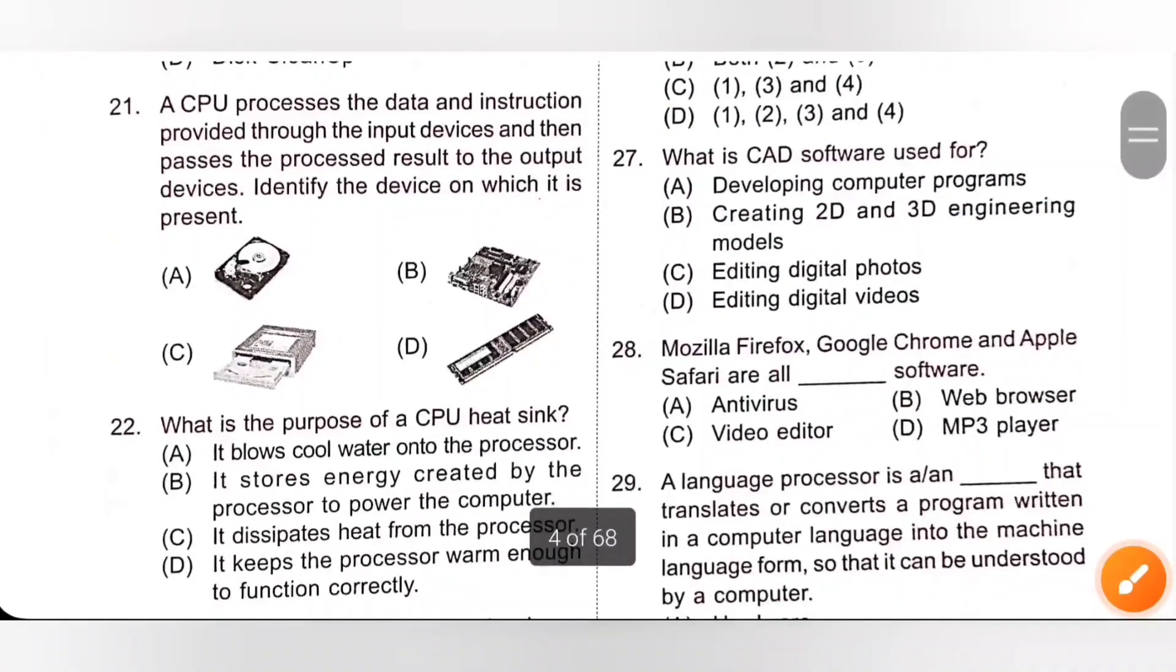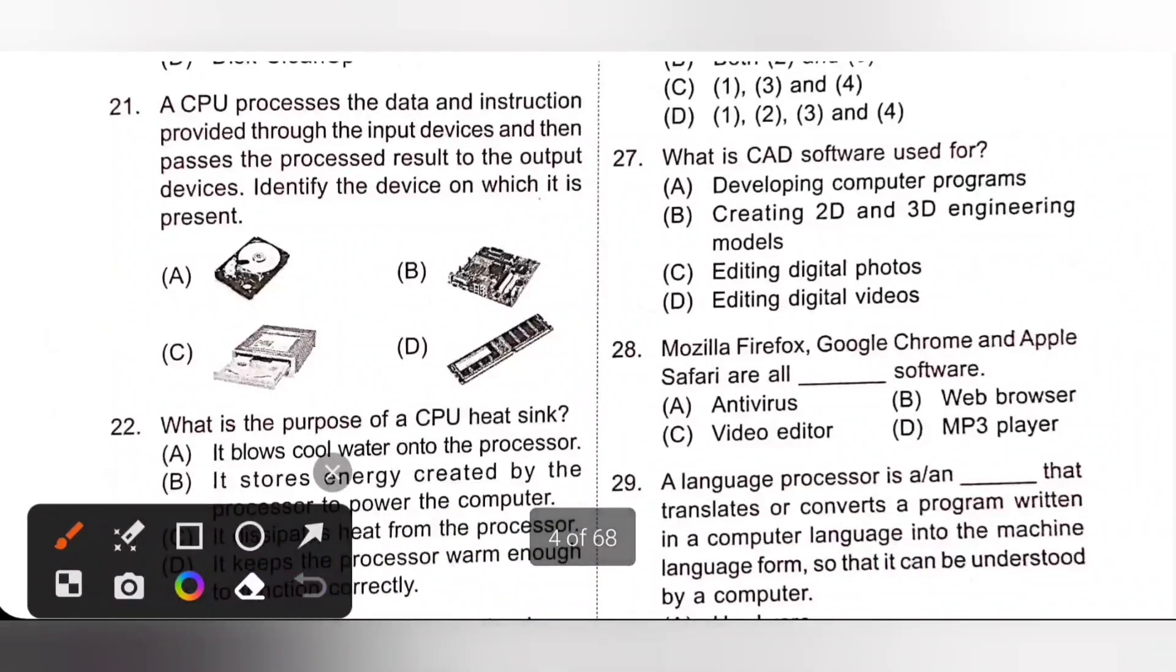Question 27. What is CAD software used for? CAD means computer aided design. This software is used by engineers and architects for designing purpose. It is used for creating 2D and 3D engineering models. Option B is the correct answer.